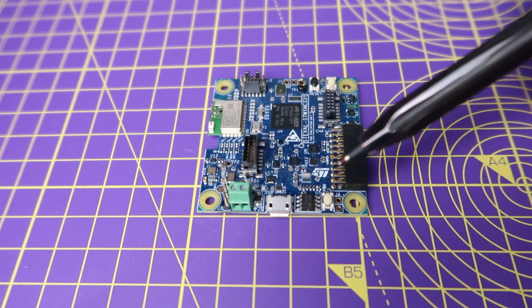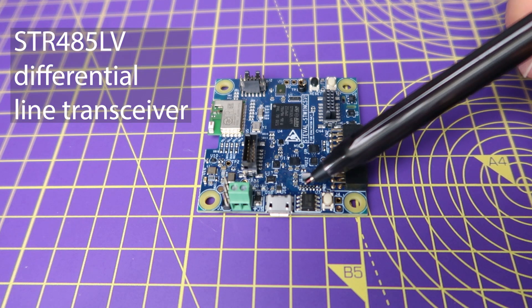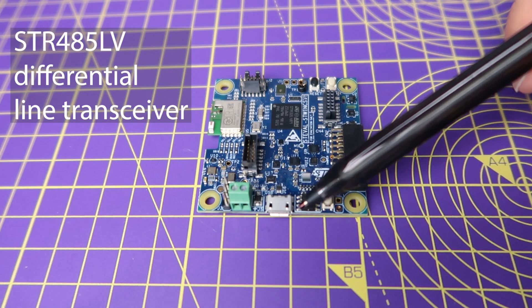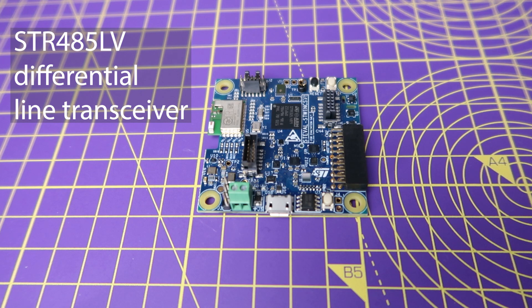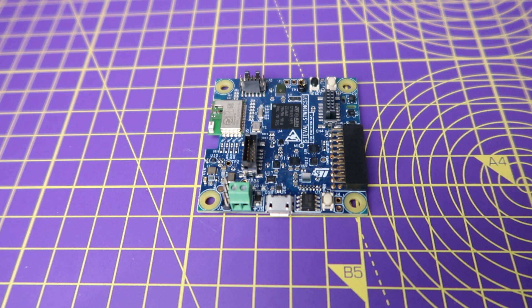And lastly, wired connectivity can be added with the ST-R485LV low-power differential line transceiver that can reach transmission speeds up to 20 Mbps.